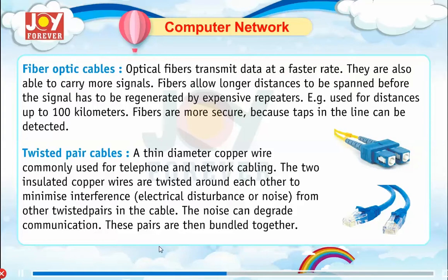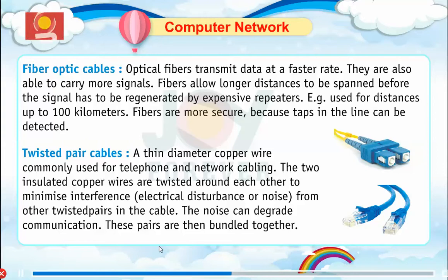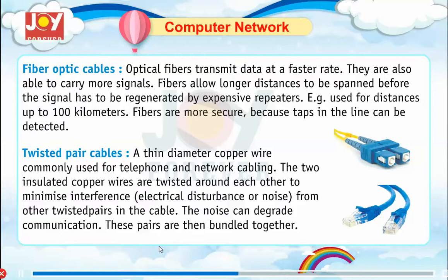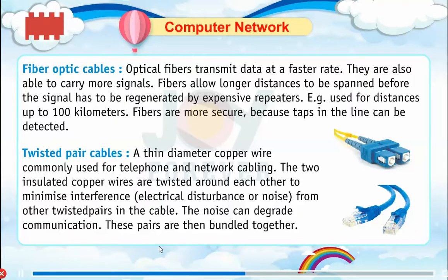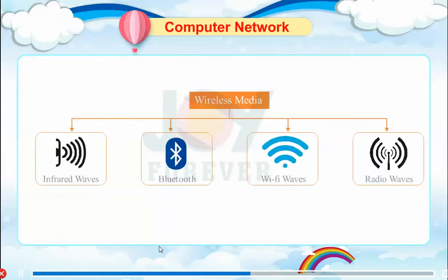Twisted pair cables: a thin diameter copper wire commonly used for telephone and networking cabling. The two insulated copper wires are twisted around each other to minimize interference from other twisted pairs in the cable. Noise can degrade communication. These pairs are then bundled together.